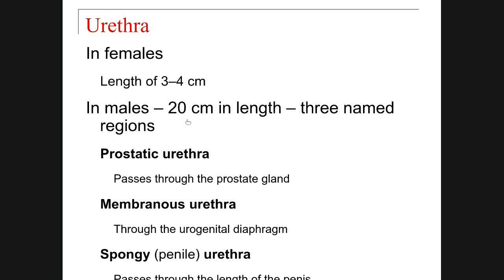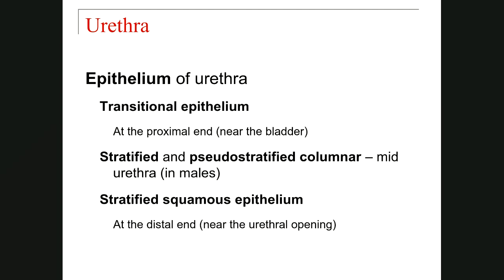In the male, the urethra has prostatic, membranous, and spongy or penile parts. The epithelium of the urethra begins as transitional epithelium at the proximal part, then transitions to a stratified and pseudo-stratified columnar epithelium, and finally changes to a stratified squamous epithelium that continues with the skin from outside.